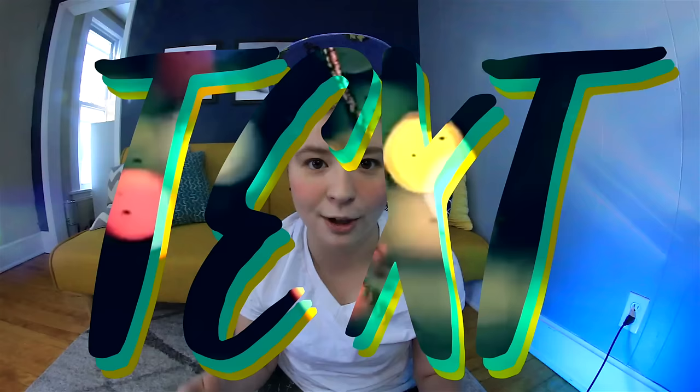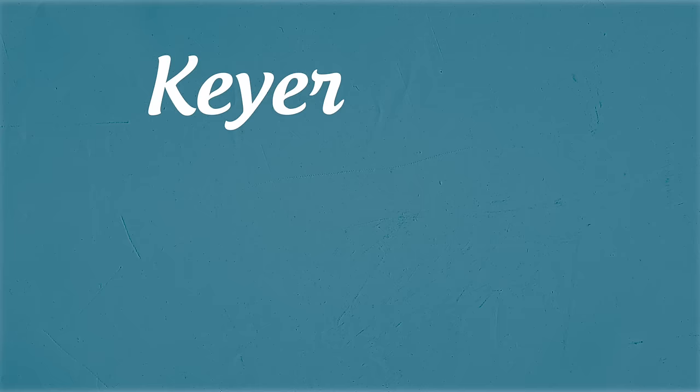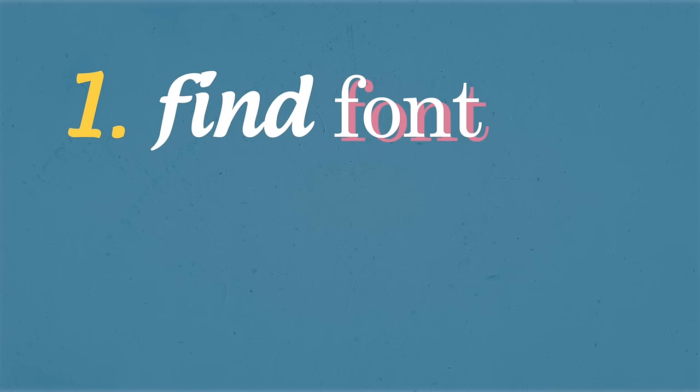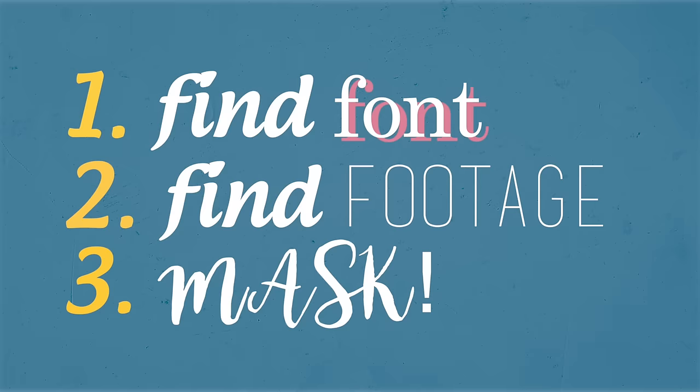Today I'm going to teach you how to mask footage into text — how to replace the color and shape of text with footage, making cool moving text-shaped footage. I don't know how to explain it, but it looks like this. It's pretty cool, I do it a lot. I'm going to be doing this in Final Cut Pro X, but as long as you have an editing software with some kind of keyer, green screen, or chroma key effect, you should be able to do this too. Even rudimentary software like Microsoft Movie Maker and iMovie have the capacity to do this. There are three steps: one, find a good font; two, find good footage; three, mask. It's easy.